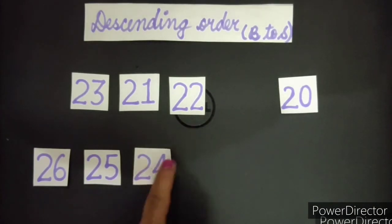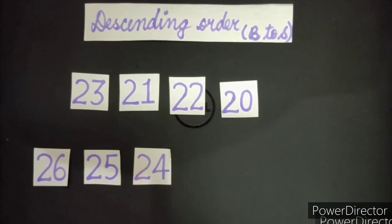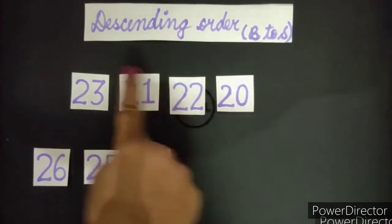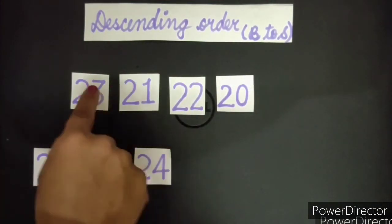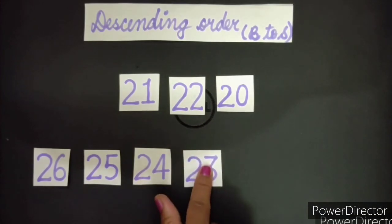Now let's see. 23, 21, 22, 20. Which one is the greatest here? This 23. Next. 21, 22, and 20. So among all these three, this is the greater number.